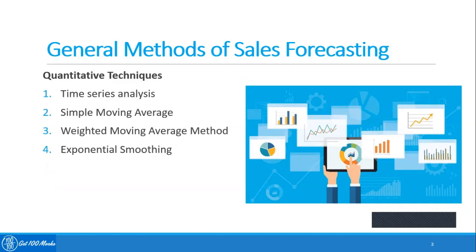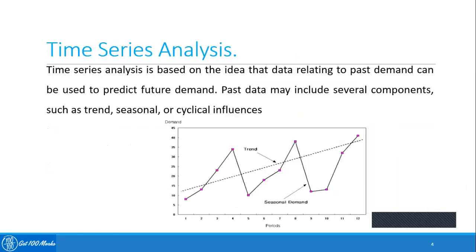General methods of sales forecasting under quantitative techniques include time series analysis, simple moving average analysis, weighted moving average method, and exponential smoothing method. Time series analysis is based on the idea that data relating to past demand can be used to predict future demand. Past data may include several components such as trend and seasonal or cyclic influences.